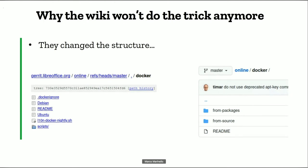So why won't the wiki do the trick anymore? If you check the TDF wiki and try to build against the fork, you will have some issues. They changed the structure: the Docker folder, which previously contained the scripts to compile everything, now has two different subfolders — 'from packages' and 'from source.' The first one provides an easy way to build the Docker image by just downloading build artifacts from the repository, installing them into the container, loading the license key and going. 'From source' is basically what the Docker folder was before.